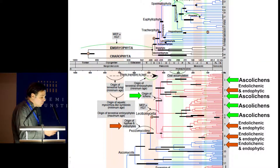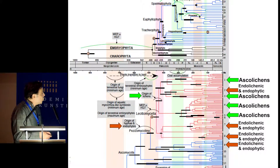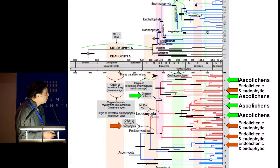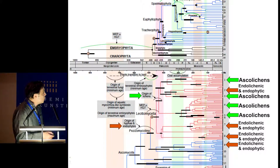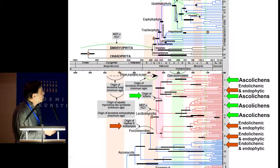If you look at the distribution of these endolichenic and endophytic fungi, it gives the impression that their origin would be early, associated with the origin of Pezizomycotina. We think this is doubtful for two reasons: endolichenic fungi cannot originate before lichens, and we think the origin of ascolichens took place between 400 and 440 million years ago.